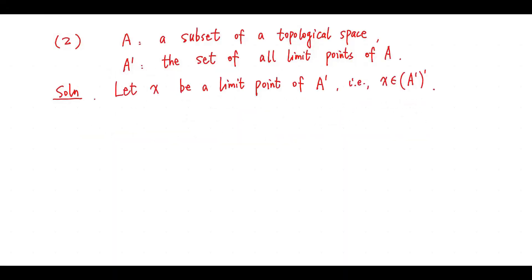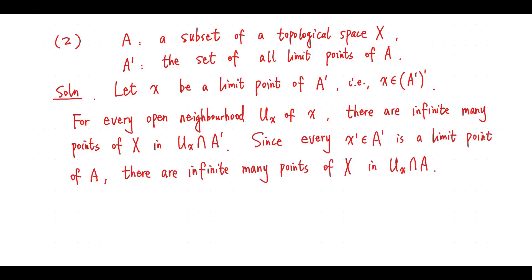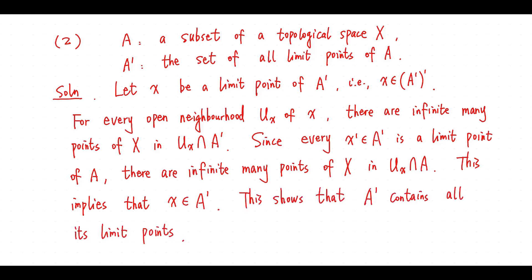Solution. Let X be a limit point of A'. For any open neighborhood Ux of X, there are infinitely many points in the intersection of Ux and A'. Since every point in A' is a limit point of A, there are infinitely many points in the intersection of Ux and A. This implies X is in A'. This shows A' contains all its limit points. Thus, A' is closed.